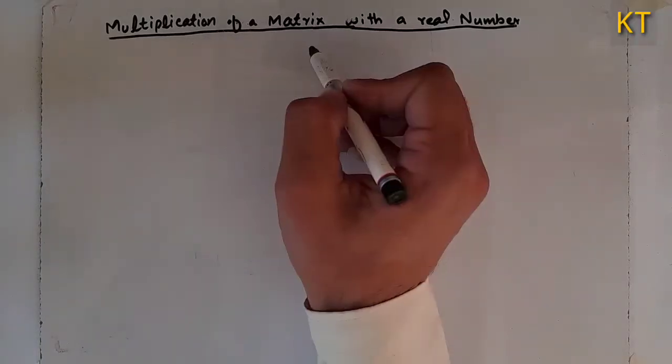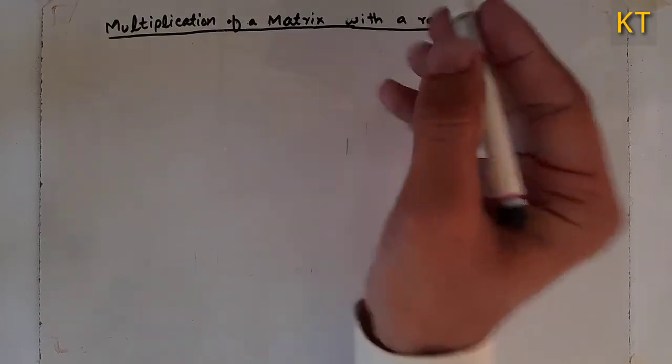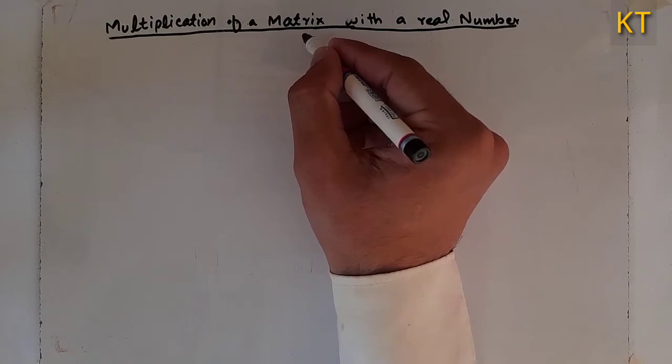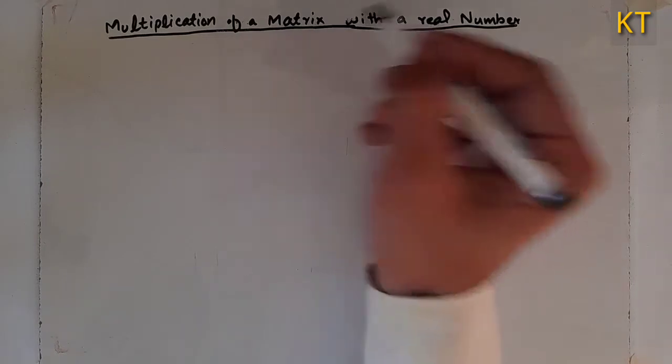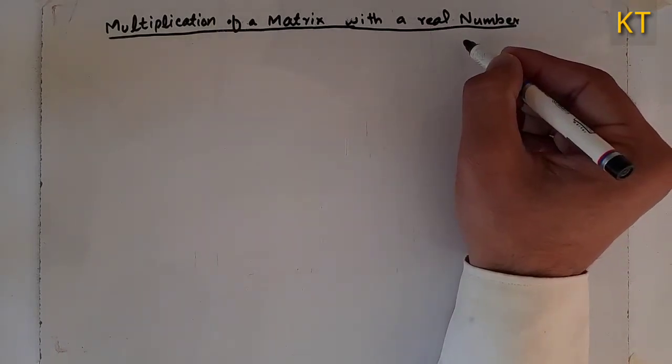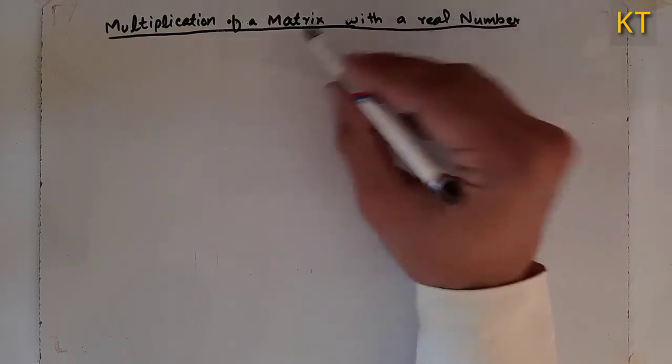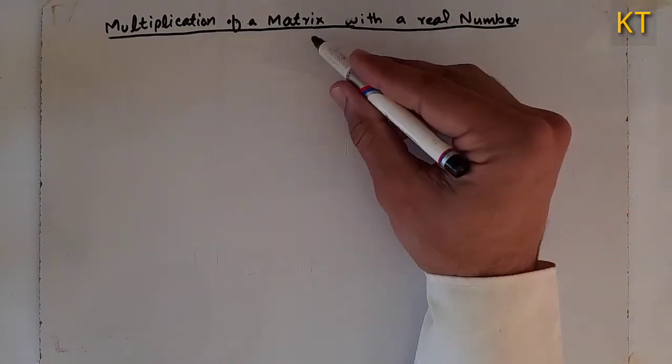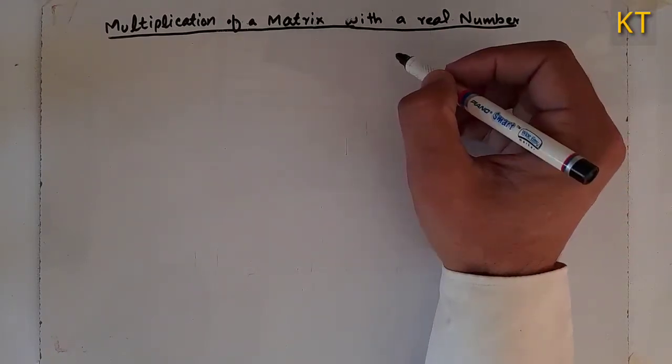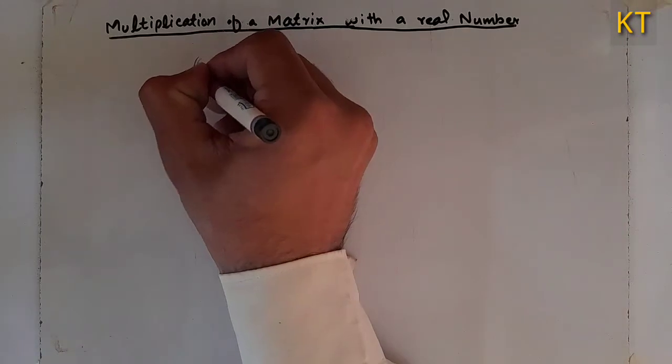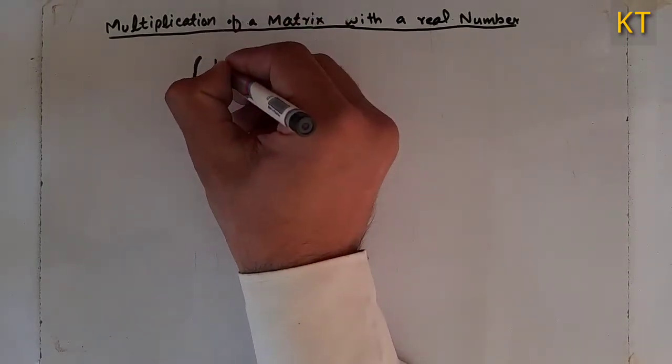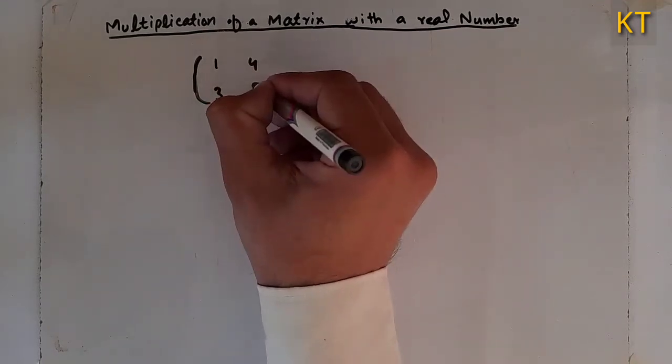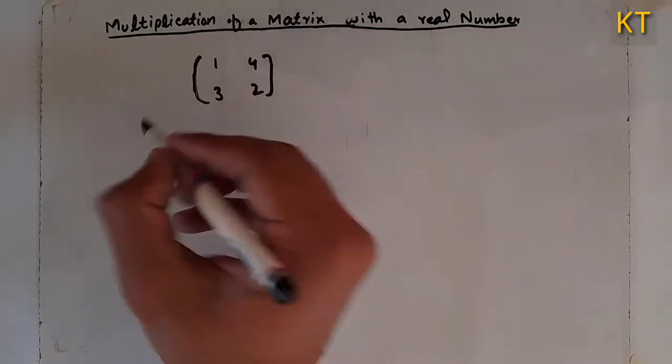The topic is the multiplication of a matrix with a real number. For example, the matrix is one, four, three, two. Among the real numbers, three will be multiplied.